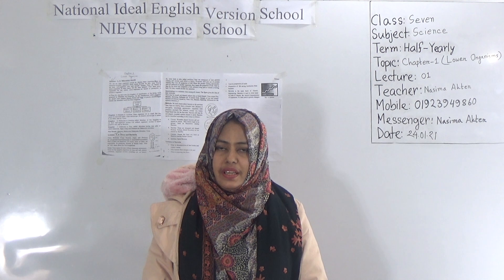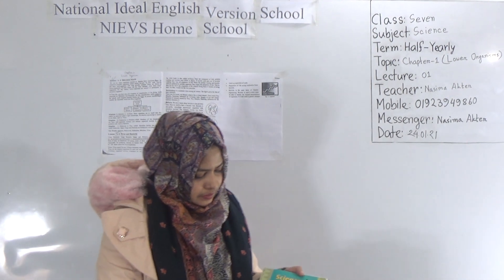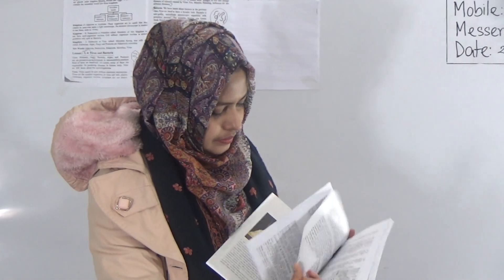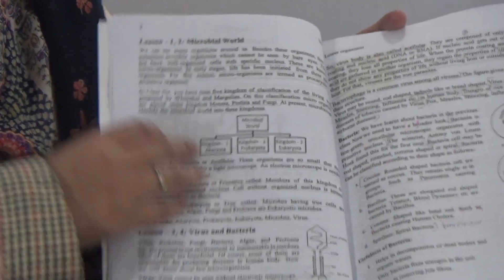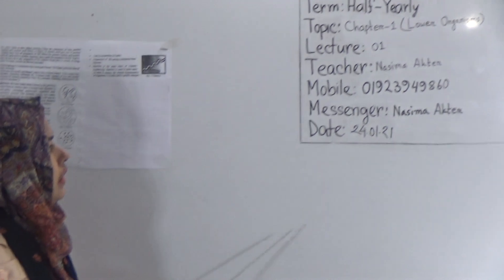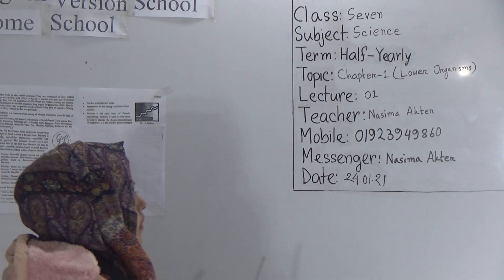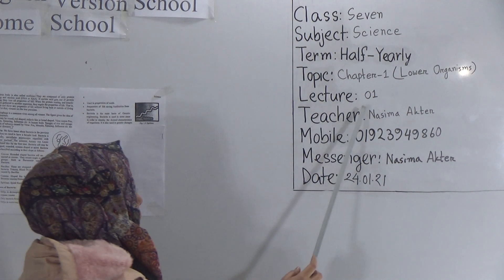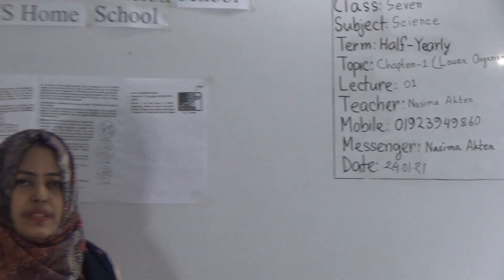Dear students, our today's topic is Chapter 1: Lower Organisms. This is your science course and our today's chapter is Lower Organisms. Today we will read lessons 1, 2, 3, and 4. This is the first lecture for the half-yearly examination of this year. Let's begin the class.